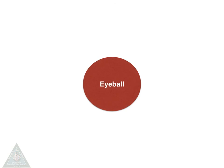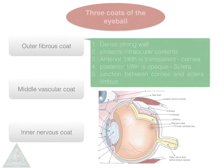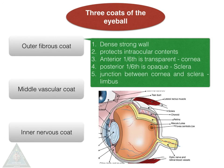The next topic is the eyeball. Each eyeball is a cystic structure kept distended by the pressure inside it. It has an anterior and posterior curvature, and the maximal convexities on these curvatures are called the anterior and posterior poles respectively. There are three coats of the eyeball: the outer fibrous coat, the middle vascular coat, and the inner nervous coat.